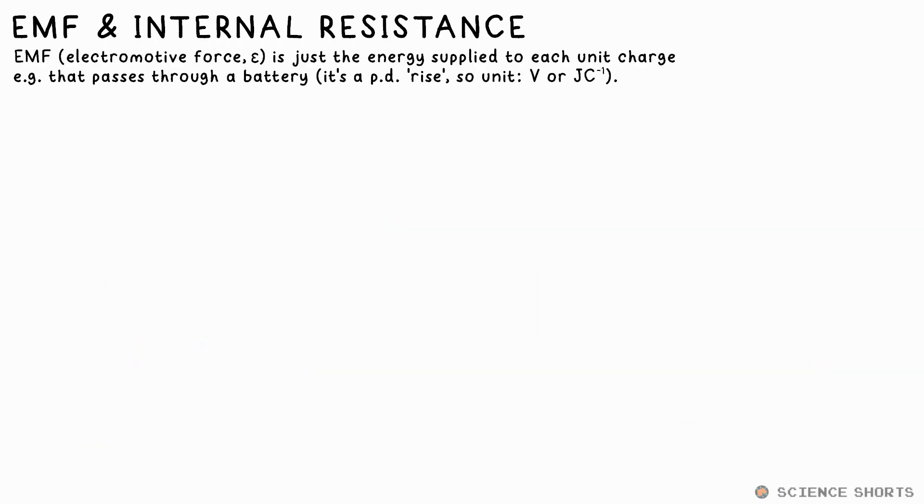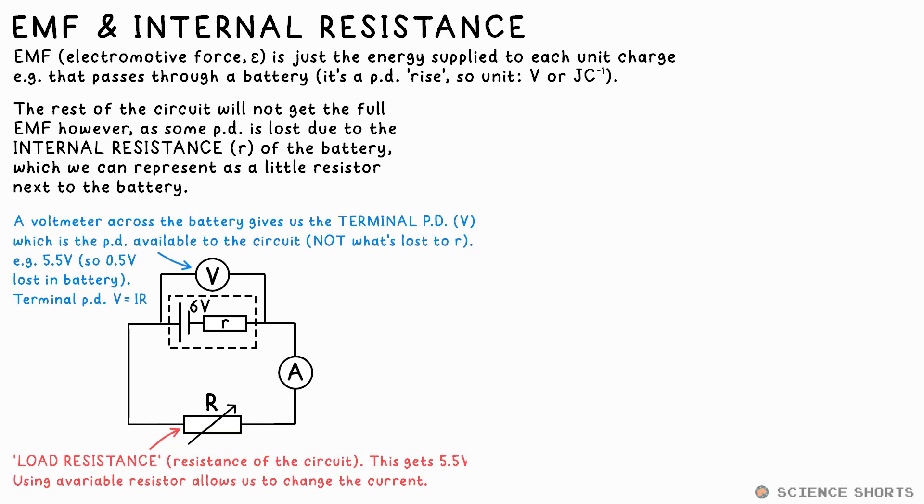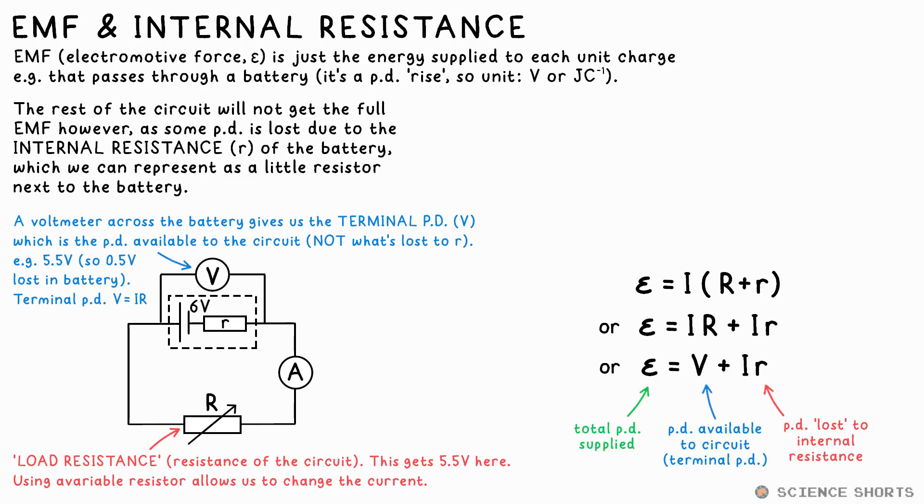It turns out batteries and cells have a resistance of their own, so if you attach a bulb to a 6-volt battery, the bulb will get less than that. A voltmeter across it might measure 5.5 volts, say. This would also be the same if we attach the voltmeter across the battery terminals instead. So we can call this the terminal PD. Be careful. This means the voltage available to the circuit. That means 0.5 volts is being lost inside the battery due to its internal resistance, little r. The EMF, electromotive force, epsilon is the symbol we use, is the total PD provided. That's the 6 volts here. So the equation is this. EMF equals terminal PD, V, plus I, little r. So I times little r is the voltage lost due to the internal resistance.